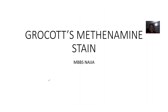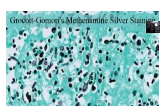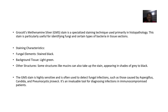We're moving to the next stain in microbiology — this is known as Grocott's Methenamine stain. Its full name is Grocott-Gomori Methenamine Silver staining. It's a specialized stain used primarily in histopathology, particularly for identifying fungi and certain types of bacteria in tissue sections.